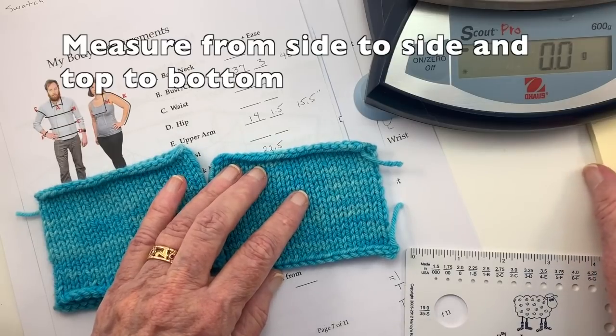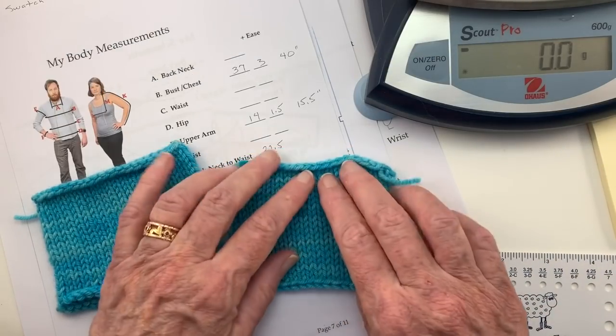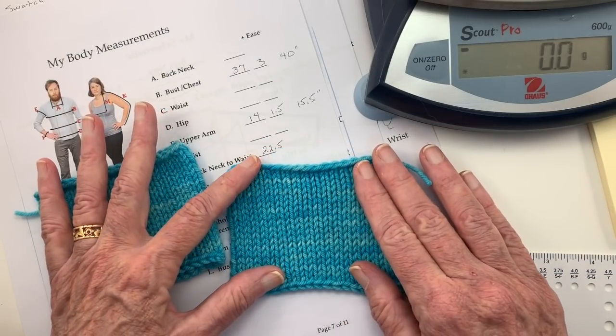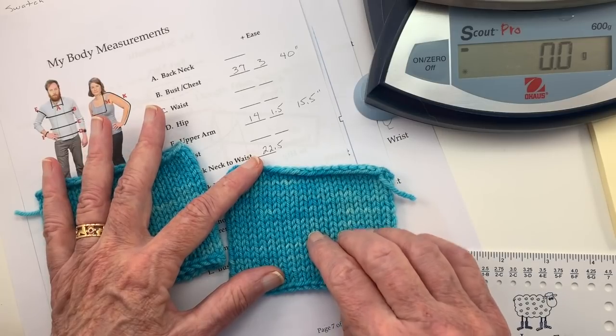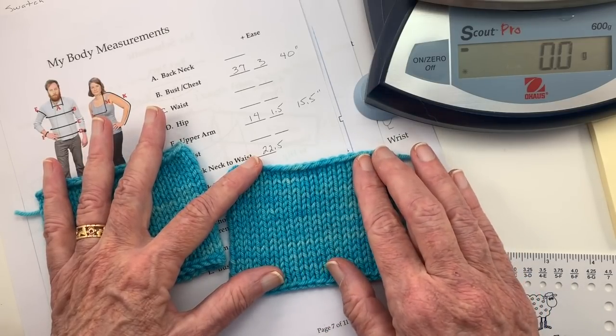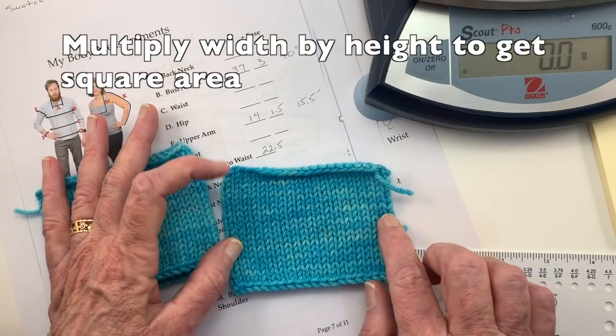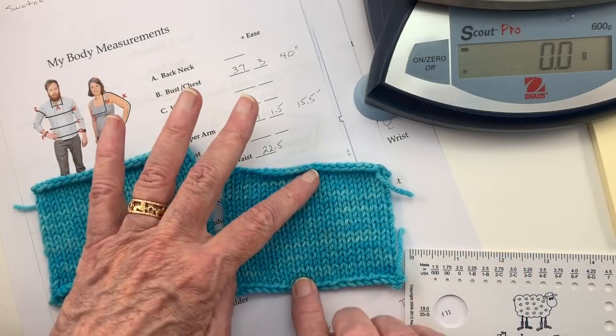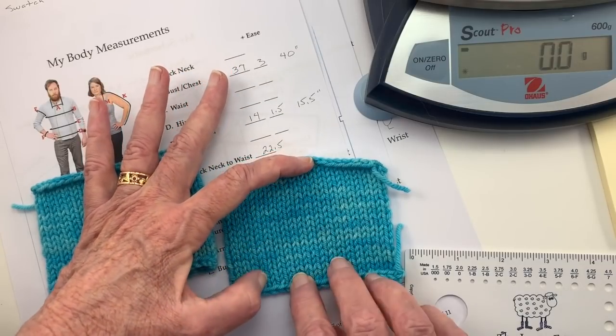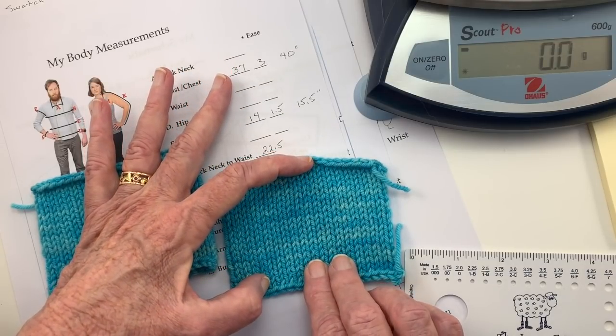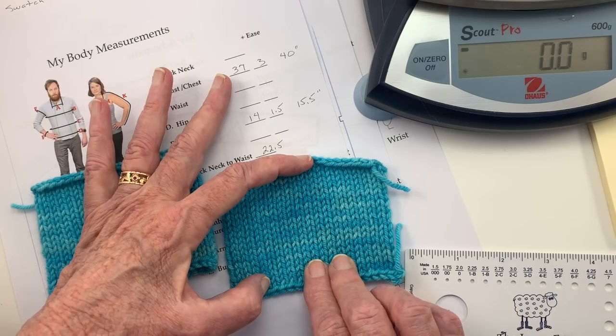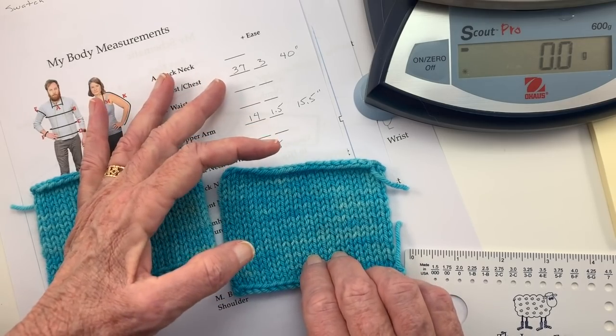And I have pre-measured these and measured how many square inches the swatch is. Now, if you're working with centimeters, you'll just figure out the square centimeters. This particular swatch measures 3.75 inches wide, 2.75 inches tall, and the square area is 10.3125 square inches.